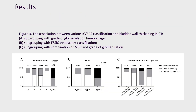Figure 3 showed the association between various IC/BPS classifications and bladder wall thickening on CT scan. In Figure 3B, using ESSIC cystoscopy classification, type 3 patients had more focal or diffuse bladder wall thickening, but the difference was not significant between type 1 and type 2. In Figure 3C, non-Hunner's IC patients were classified by MBC and glomerulation grade, showing a significantly higher proportion of focal or diffuse thickening in patients with smaller MBC and higher grades of glomerulation.